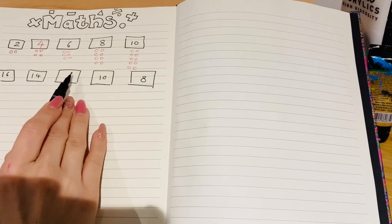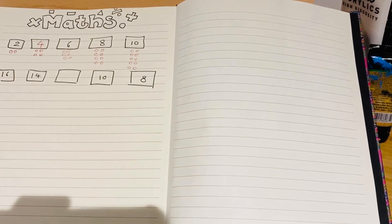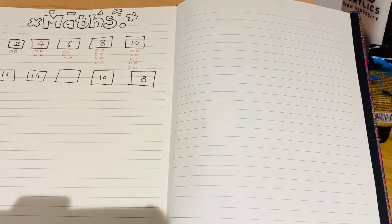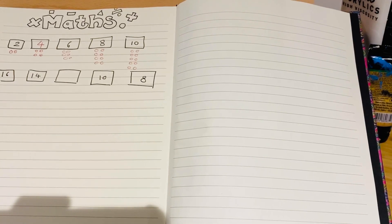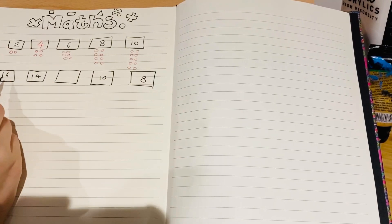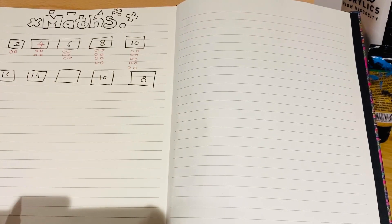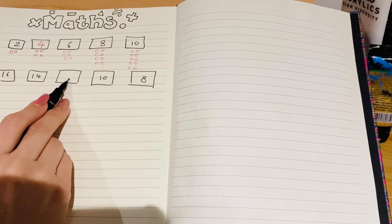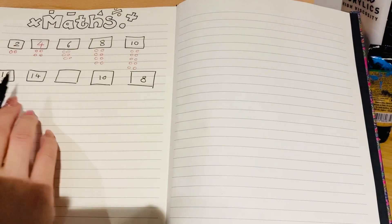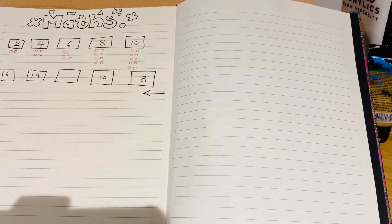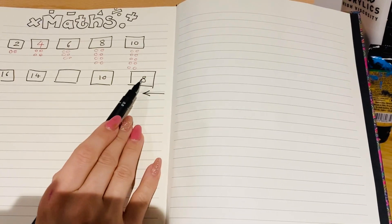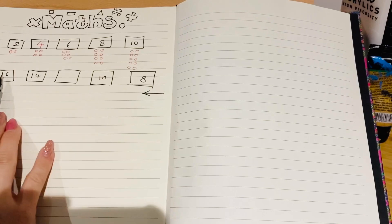Because if you read it a certain way, you can actually see the pattern already. So, are the numbers getting bigger or smaller? First of all, have a think about that. It goes sixteen, fourteen, something, ten, eight. Write down on your piece of paper, are the numbers getting bigger or smaller? Okay, if you've had a think, you'll notice they're getting smaller. Sixteen is a greater number than fourteen.